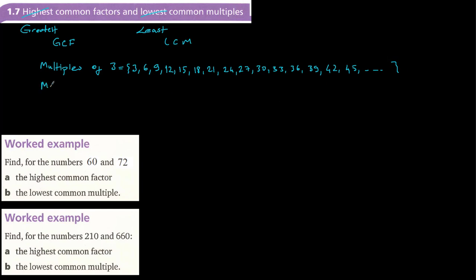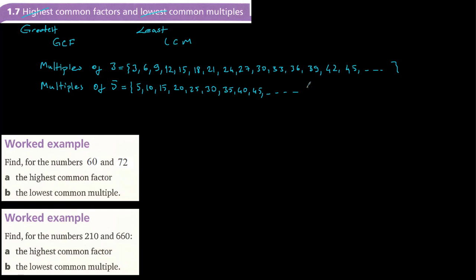Now, the multiples of five: you start with five, then five plus five — or five times two — equals ten, then five times three equals fifteen. The multiples of five are: 5, 10, 15, 20, 25, 30, 35, 40, 45. I stopped at 45 because I want to show the common multiples.